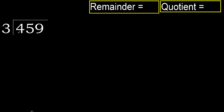459 divided by 3. 4 is not less, therefore we work with 4. 3 multiplied by which number is nearest to 4 but not greater? 3 multiplied by 2 is 6 — 6 is greater. Multiplied by 1 is 3, which is not greater. Subtract: 4 minus 3 is 1.